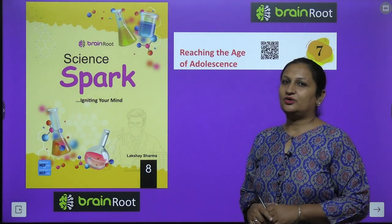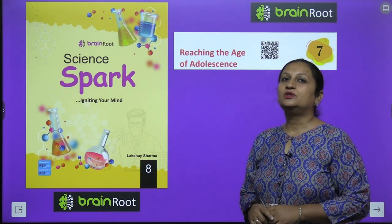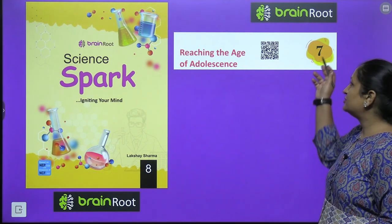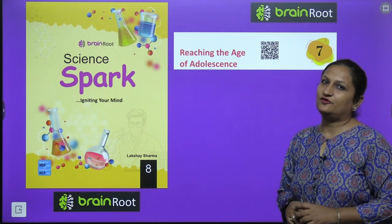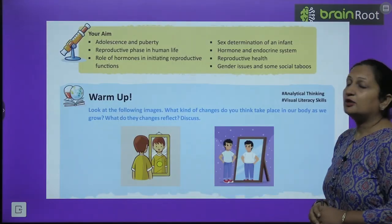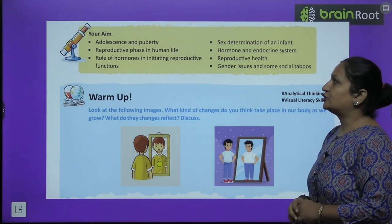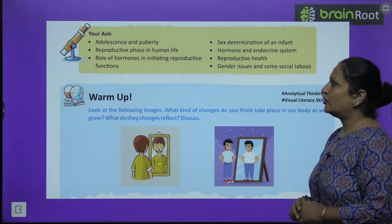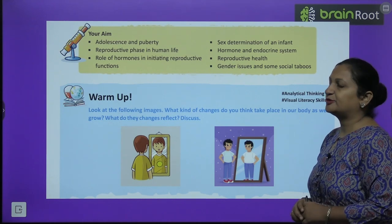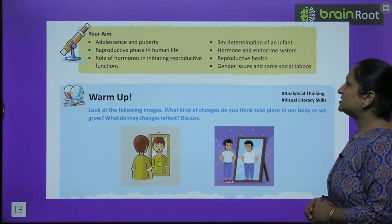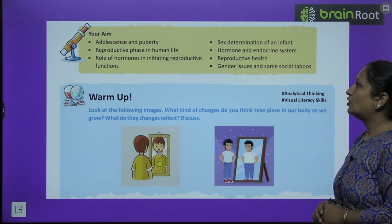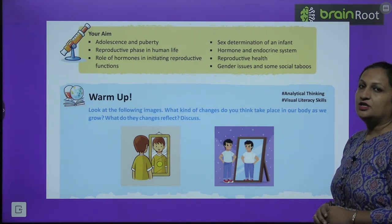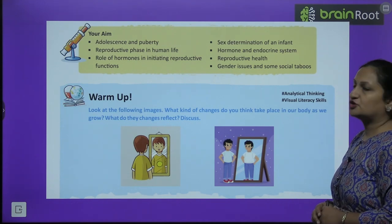Hello my dear children, this is Shikha Arora and today we are going to do Class 8 Science Chapter 7: Reaching the Age of Adolescence. The main aim of this chapter is adolescence and puberty, reproductive phase in human life, role of hormones in initiating reproductive function, sex determination of an infant, hormones and endocrine system, reproductive health, gender issues and some social taboos.